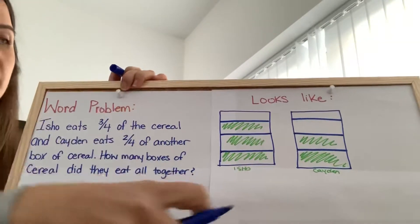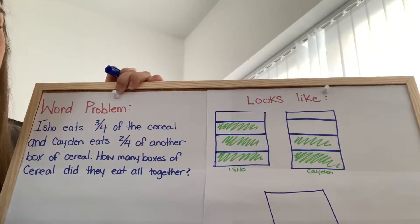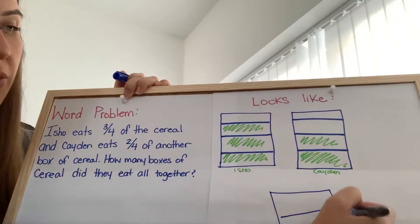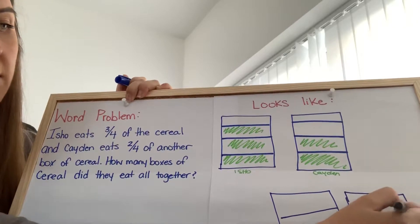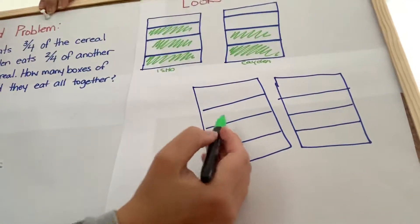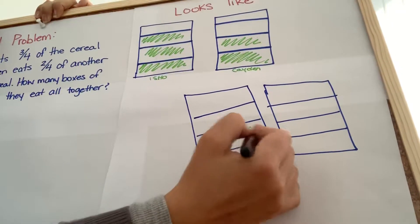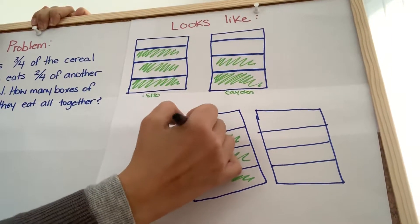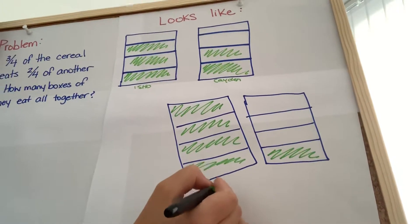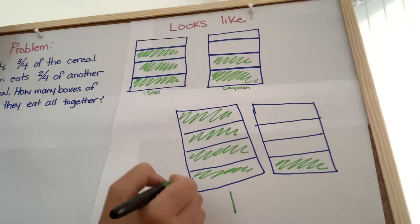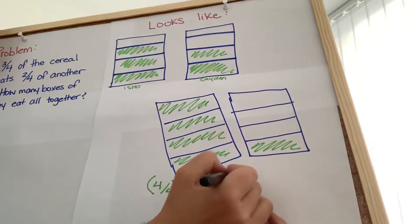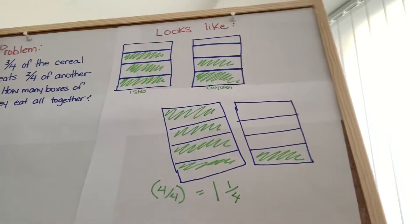So, to add them together, we're going to pretend we have another cereal box. And we're probably going to need another one. And you'll see why in a second. So, we've got the three from Isho. Then we've got the two from Caden. So, that means we have one whole, right? So, one whole would be four out of four. That means it's one whole. And then we have one out of four. So, they ate one and one quarter boxes of cereal.